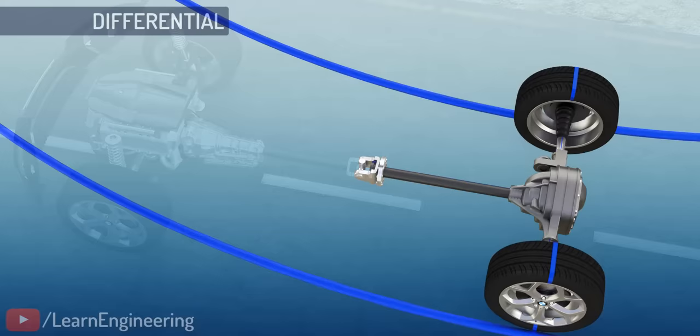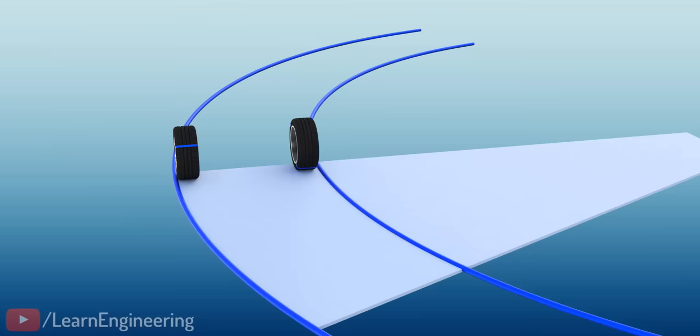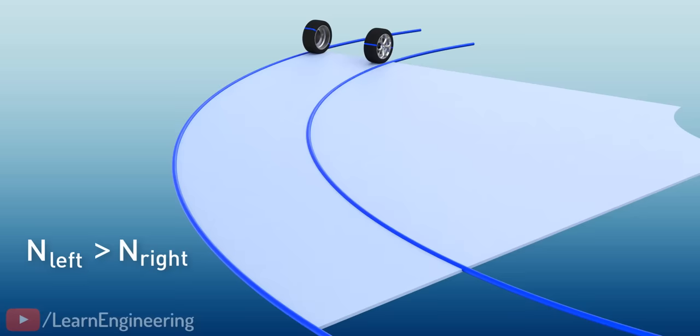Consider these wheels, which are negotiating a turn. Clearly, the left wheel has to travel more distance than the right wheel, which means that the left wheel has to rotate at a higher speed.